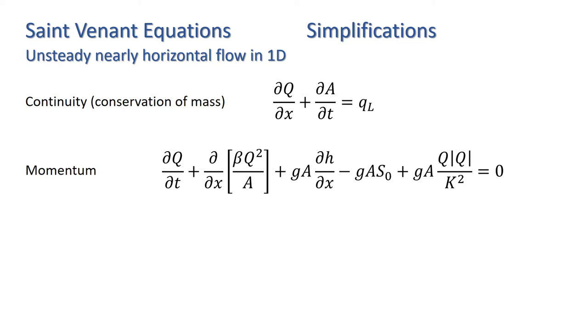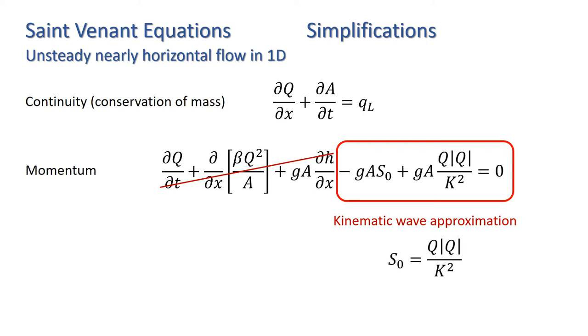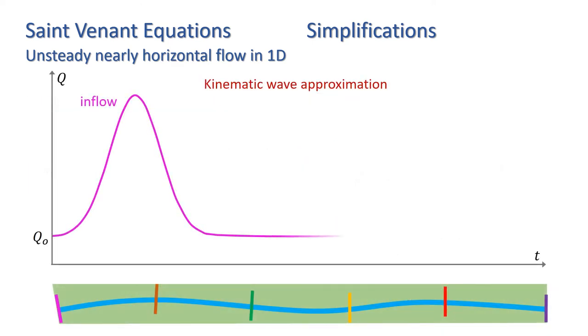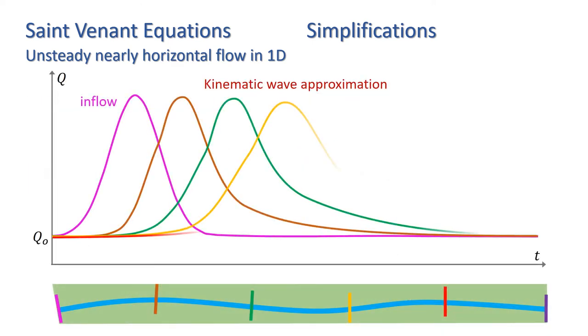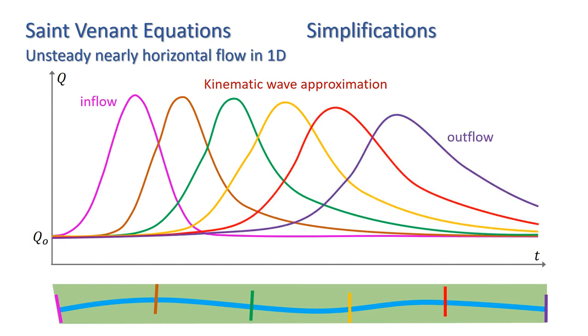When the source terms, i.e. the bed slope and friction terms are much larger than the first three terms in the momentum equation, we ignore the smaller terms and make what is known as a kinematic wave approximation. The momentum equation in this case thus reduces to s0 equals q mod q over k squared. That is, gravity forces and friction forces are balanced. This approximation implies steady uniform flow. In this case, the solution will look something like this, where again the graphs of discharge against time are shown for six points along the reach.